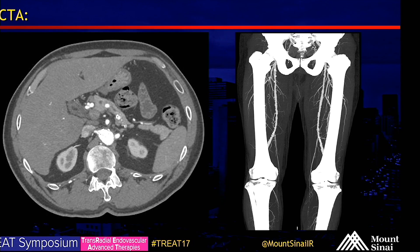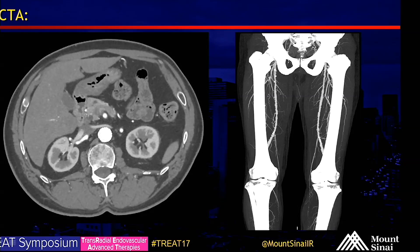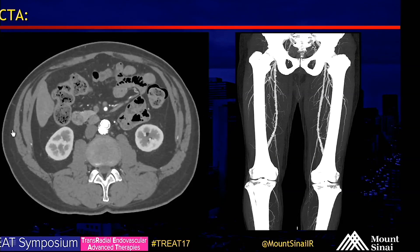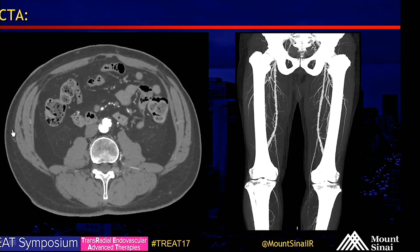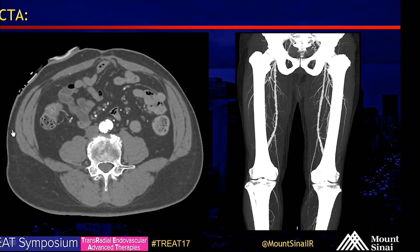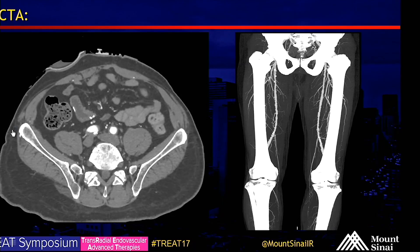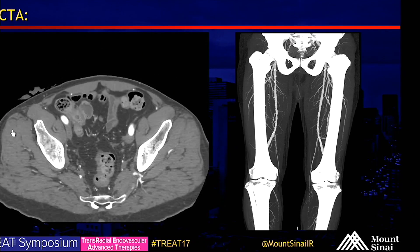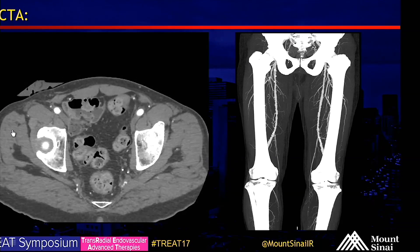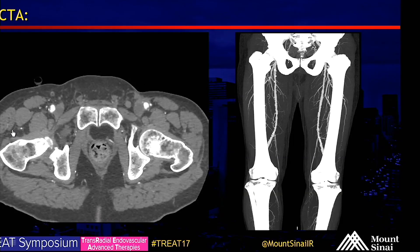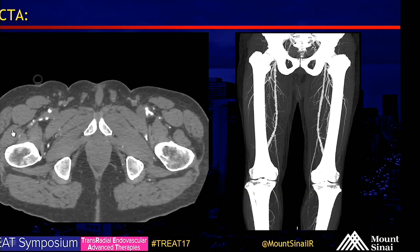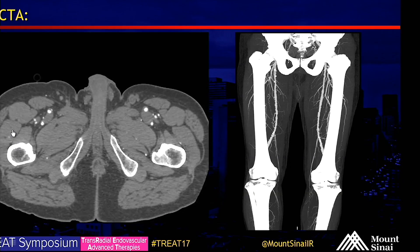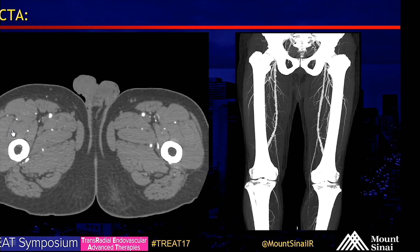On CT angiography, you can see the endograft and then right SFA disease on the MIP on the right side — diffuse disease with areas of severe stenosis extending down to the popliteal artery.